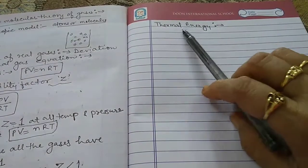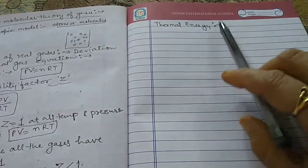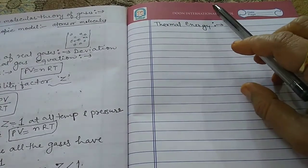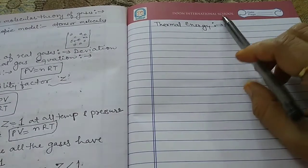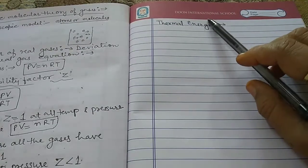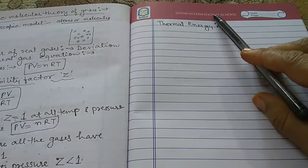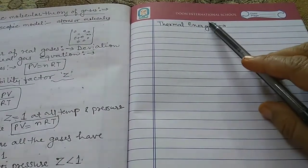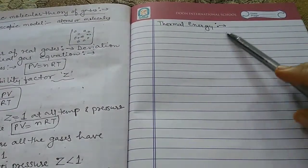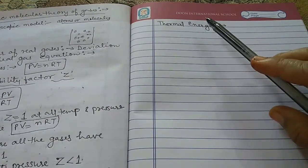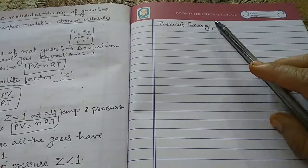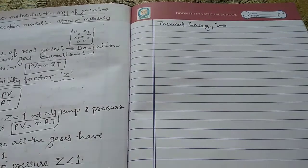The last topic of this chapter is thermal energy. Thermal energy is the energy of a body due to the motion or movement of its atoms or molecules. It is directly proportional to the temperature of the substance, and it is a measure of the average kinetic energy of a particle of matter. This movement is therefore also called thermal motion, and it keeps the molecules apart.